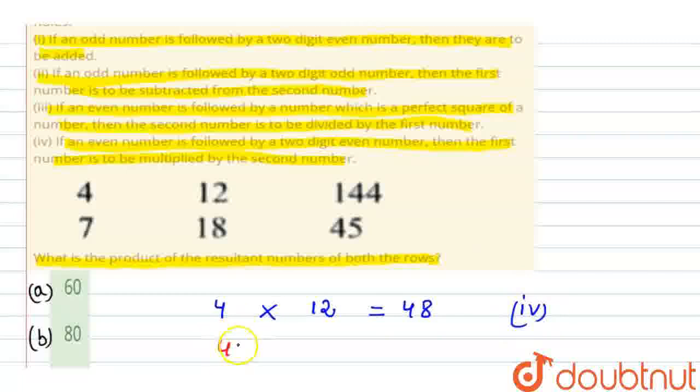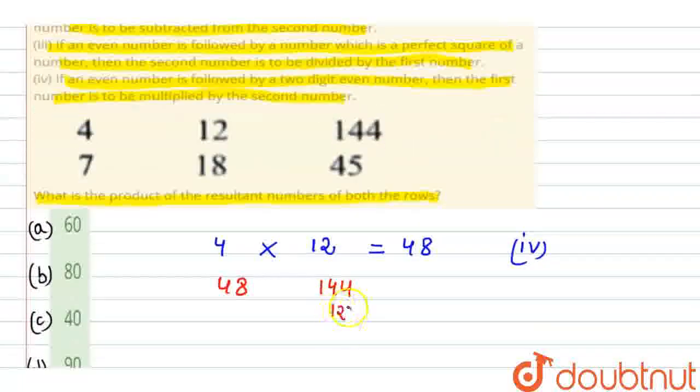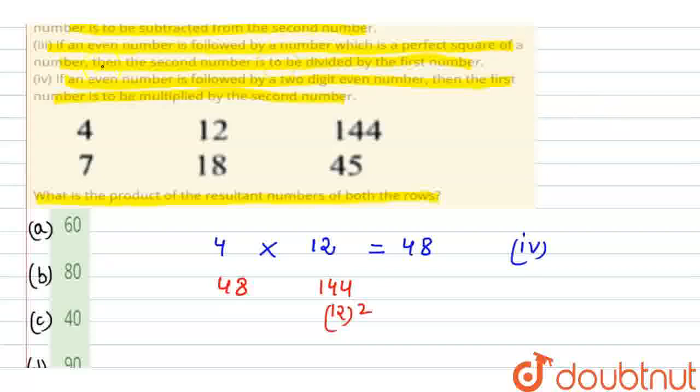Now next, 48 and 144. Look, 144 is a three-digit number, but 144 we can say is 12 square. So according to rule third, even number is followed by a number which is the perfect square of a number. Then the second number is to be divided by the first number. That means 144 divided by 48, this is equal to three, according to rule third. So first row's result is three.